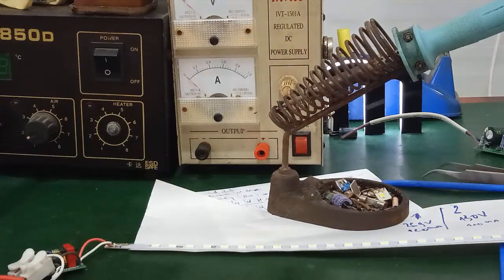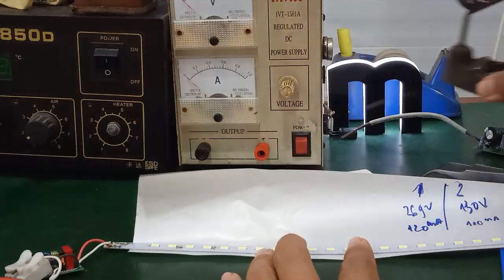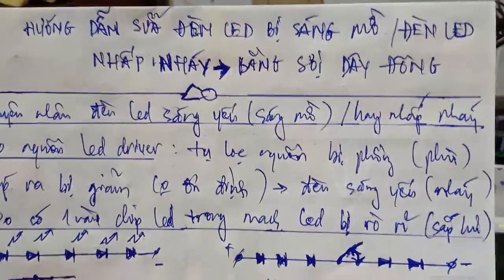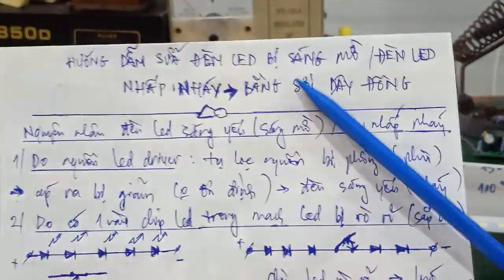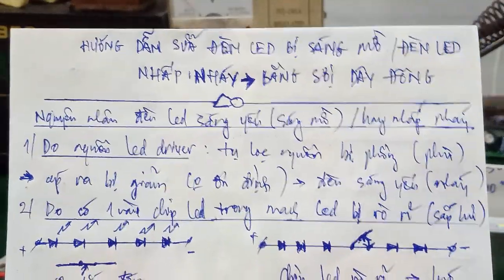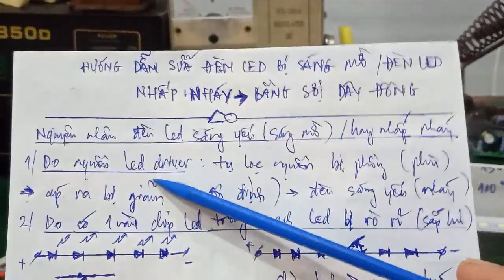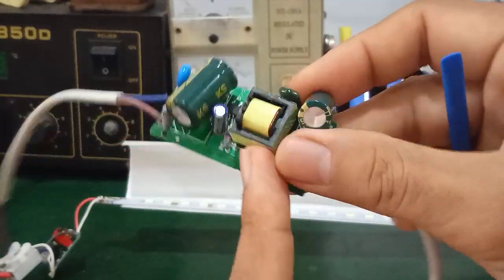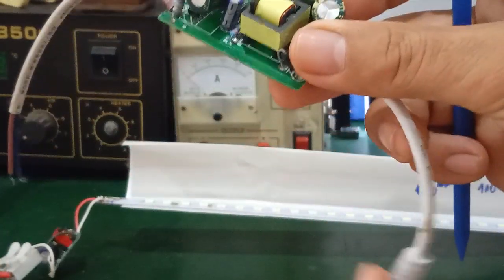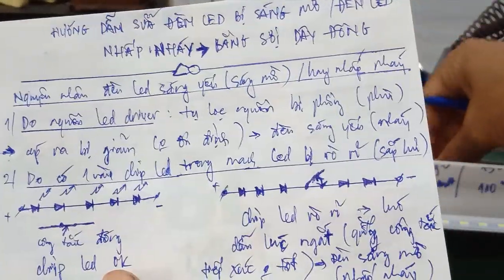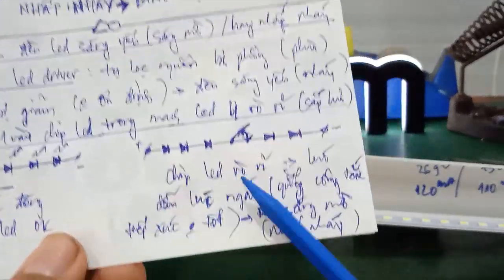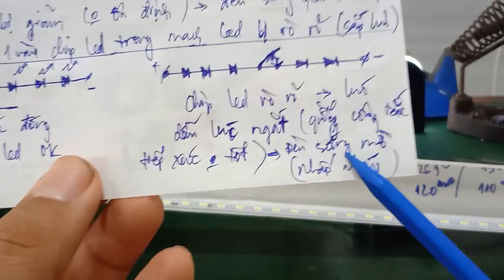Rồi, video này mình đã hướng dẫn các bạn cách sửa chữa đèn LED bị sáng mờ hoặc nhấp nháy bằng một cái nhíp hoặc một cái sợi dây di động. Có hai nguyên nhân: một là do nguồn LED driver — tụ bị phồng bị phù làm điện áp sụt giảm hoặc chập chờn; hai là do những con chip LED bị rò rỉ, gây ra hiện tượng sáng mờ hoặc nhấp nháy.